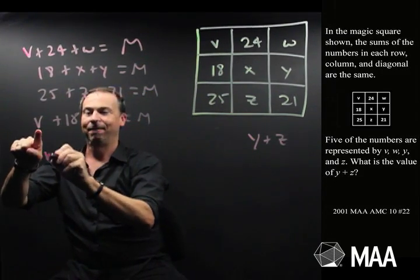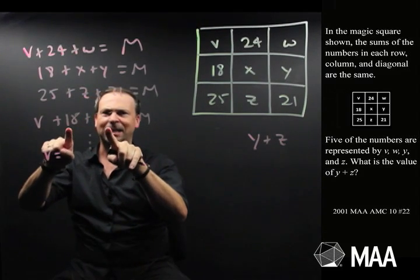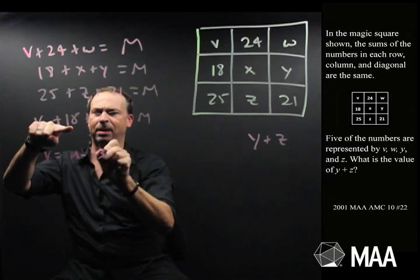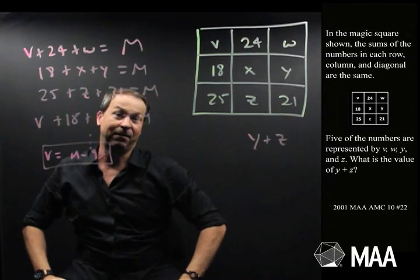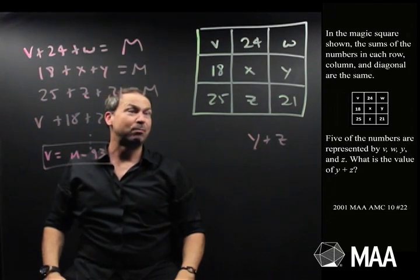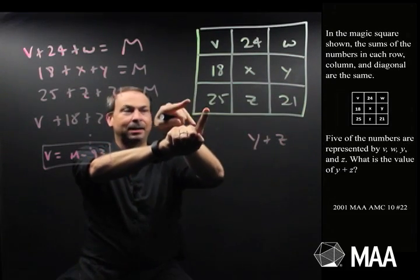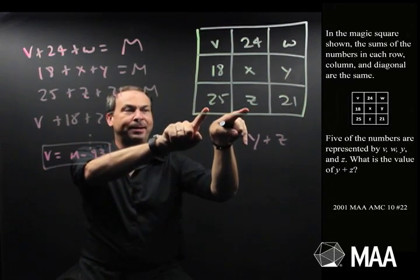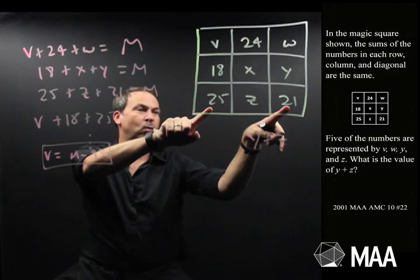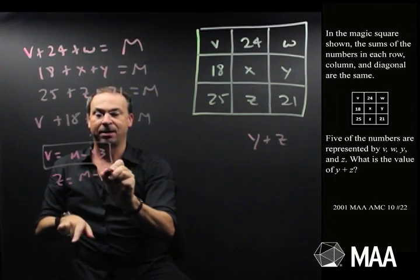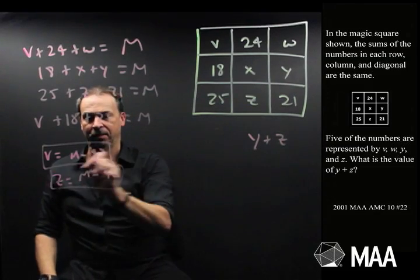So this tells me, V is actually 18 plus 25. What's that? That's 33, 43 is M minus 43. That feels like something. Another extreme one. What would be another extreme one I could do? Oh, Z. If I did this row, there's a row with only one variable in it. So 25 plus 21, that's 46 plus Z equals M. So Z is actually M minus 46.